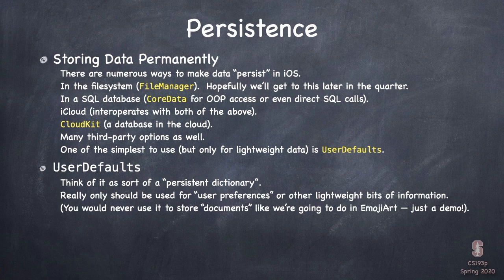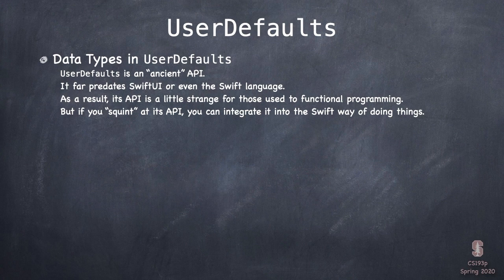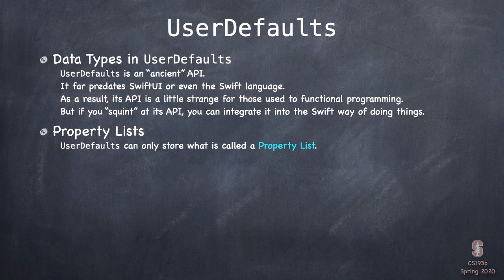We need some lightweight way to store our documents, so we're going to use UserDefaults. It's valuable for storing lightweight things, but there's some quirkiness to it. UserDefaults is quite limited in the type of data it can store — it's an ancient API that's been around a long time. It far predates SwiftUI or even Swift, and its API is a little strange for those used to functional programming, but we can make it look close enough to Swift.